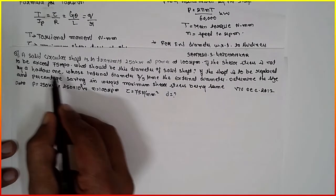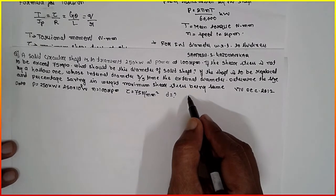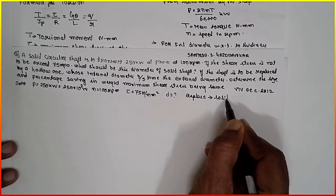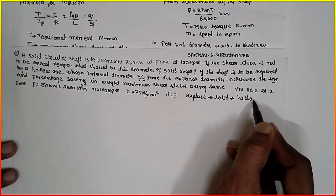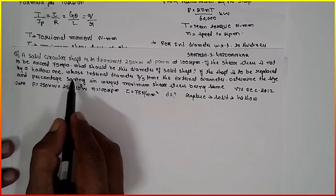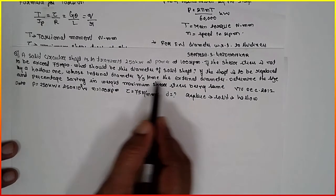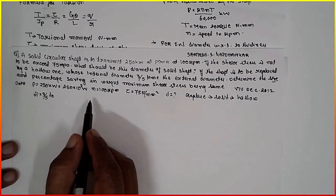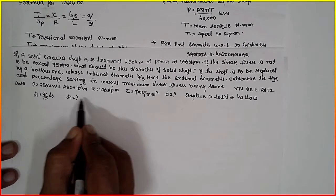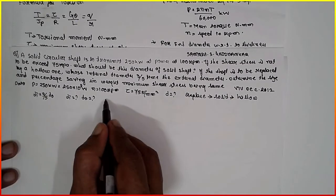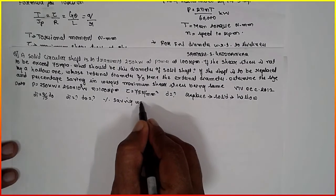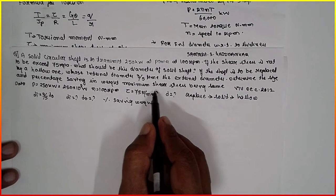If the shaft is to be replaced by a hollow shaft — replacing solid with hollow — whose internal diameter is 3/5 times the external diameter, i.e., Di = (3/5) × D0, we must determine the size (Di and D0) and the percentage of saving in weight, with the maximum shear stress being the same.